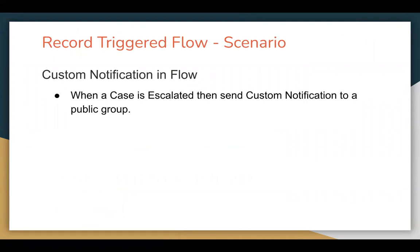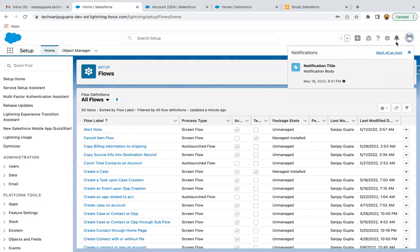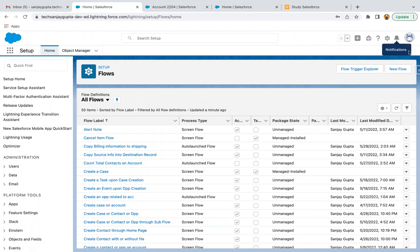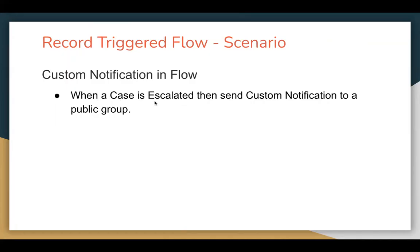In this video you will understand custom notification in flow. In a record trigger flow, if you want to send a custom notification, the requirement says: whenever a case is escalated, we need to send a custom notification to a public group. We can send a custom notification to an individual user as well as to a public group. Custom notification basically appears in the bell icon.